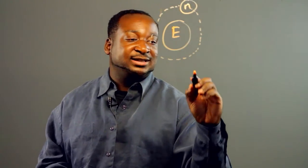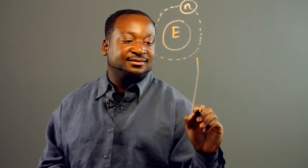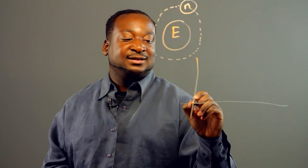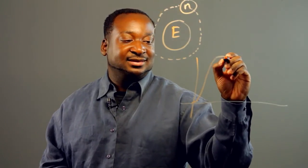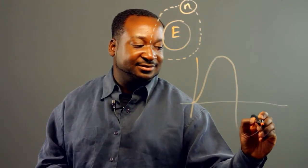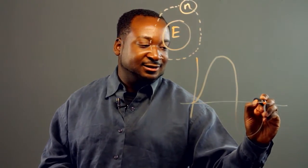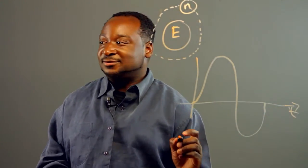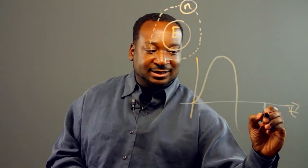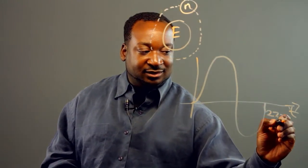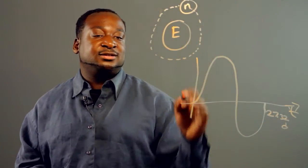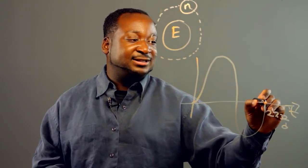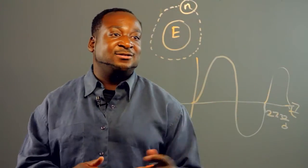And if you want to draw this on a graph, it looks like this. It goes up, and then it goes down. And it's time. And we know that it takes the moon 27.32 days to go around the earth. And then once it goes around the earth, it just keeps on repeating and repeating, on and on and on.